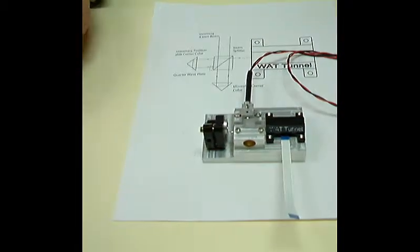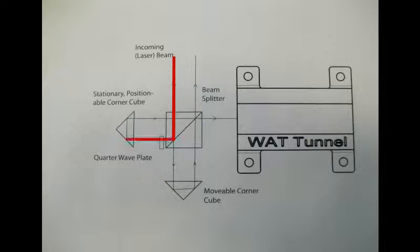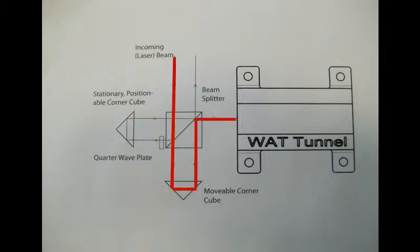Here we have a sketch and a physical model of such an interferometer. An input laser beam is beam split, and one path goes directly into the tunnel. The second path comes to a second corner cube and combines at the beam splitter and into the tunnel.